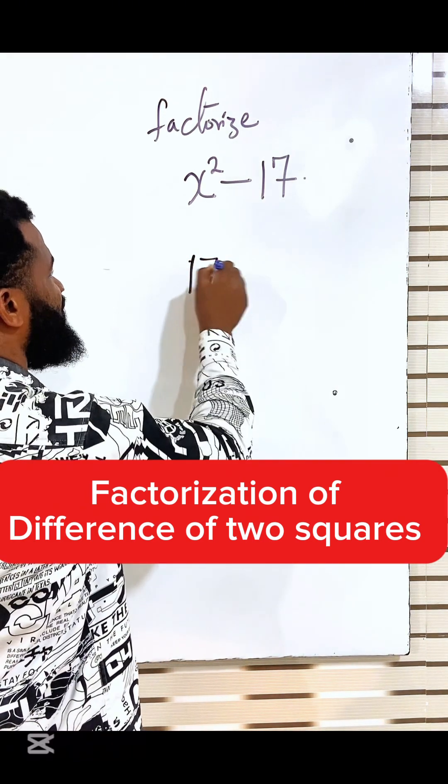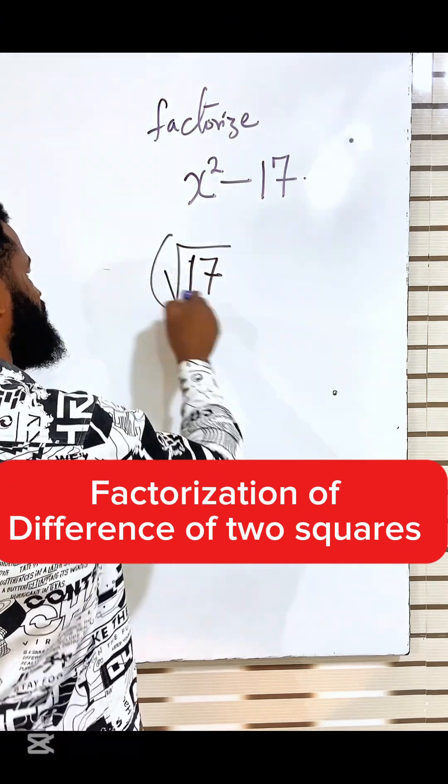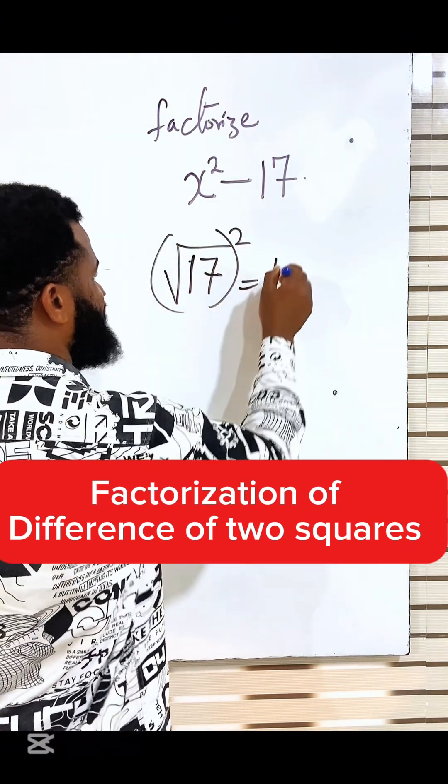Remember that if I have 17, square root of 17 all raised to the power of 2 is equal to 17.